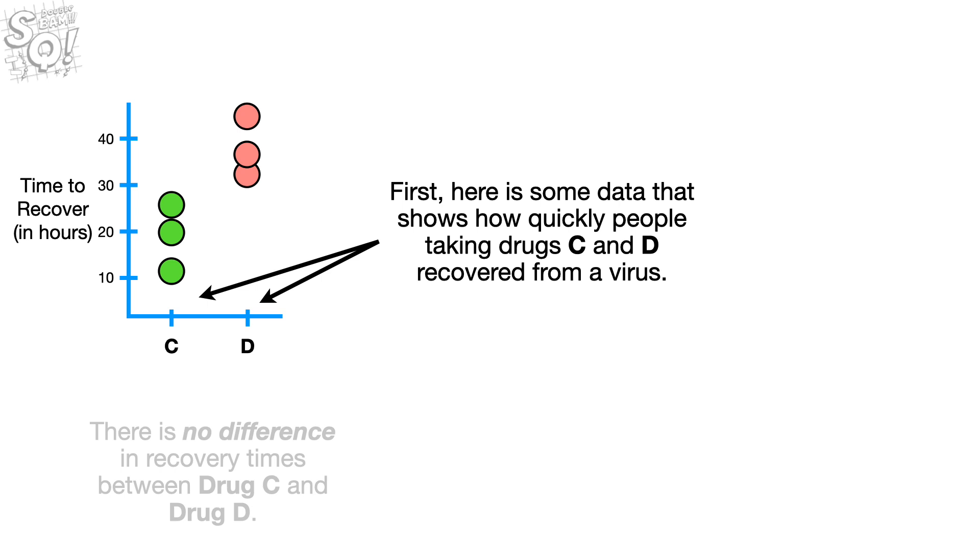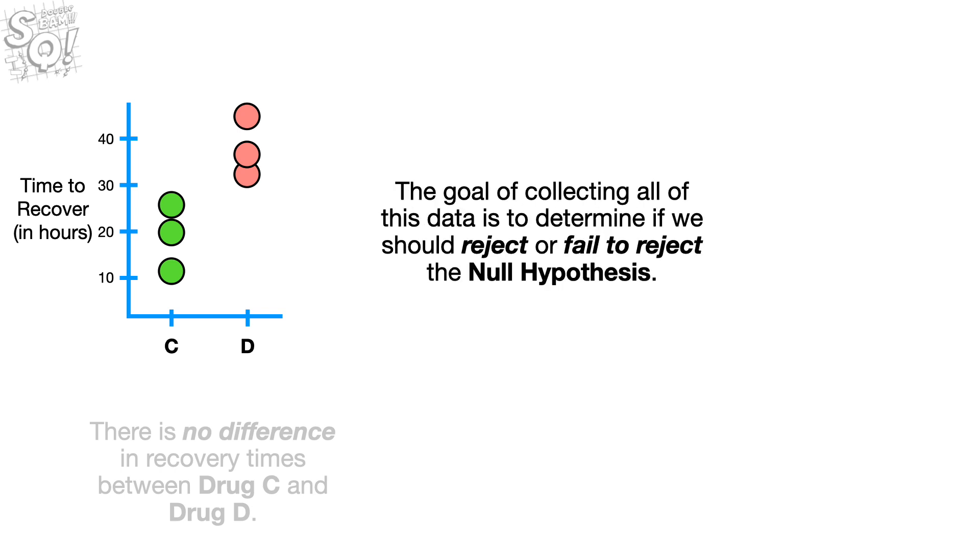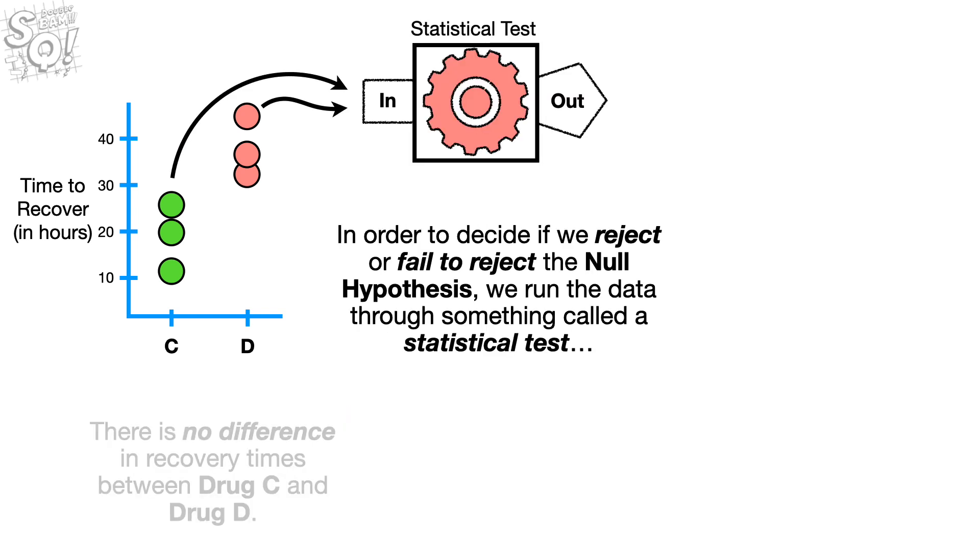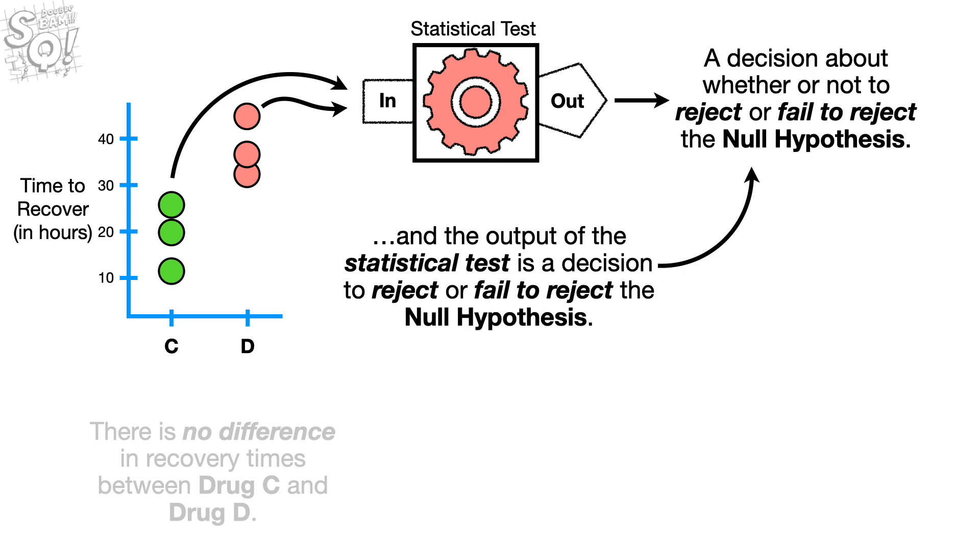First, here is some data that shows how quickly people taking drugs C and D recovered from a virus. The goal of collecting all of this data is to determine if we should reject or fail to reject the Null Hypothesis. In order to decide if we should reject or fail to reject the Null Hypothesis, we run the data through something called a statistical test. And the output of the statistical test is a decision to reject or fail to reject the Null Hypothesis.